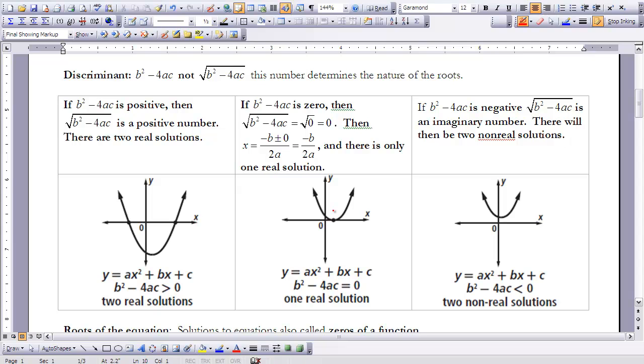Now, if b squared minus 4ac is negative, that means I'm going to get an imaginary number, which means I will have solutions. They just will not be real. That means they will not intersect the x-axis. So I know that I will have two non-real solutions.